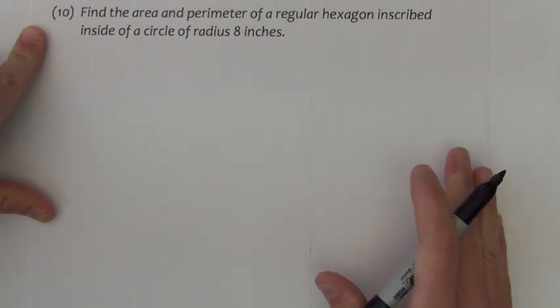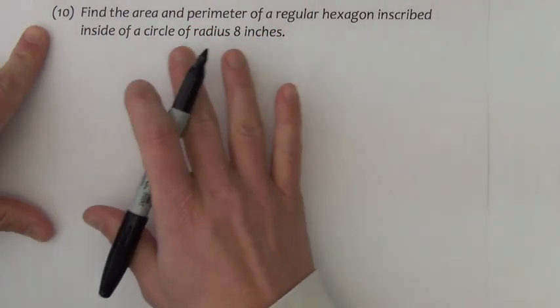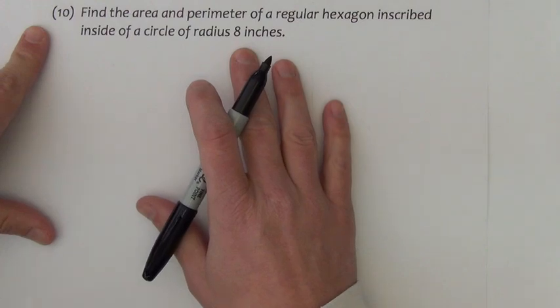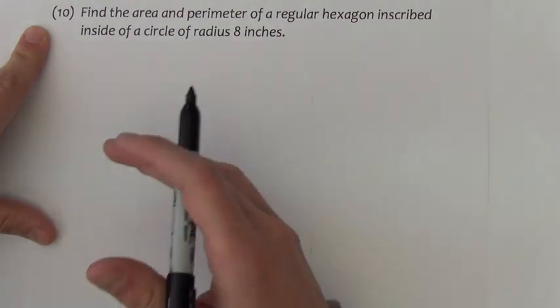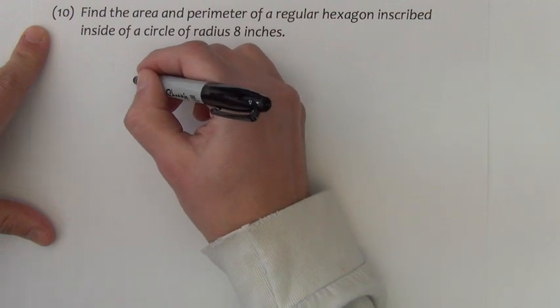The next question, number 10, asks me to find the area and perimeter of a regular hexagon inscribed inside a circle of radius eight inches. A drawing is not required, but it can certainly help. So let's do my best to draw a circle here.